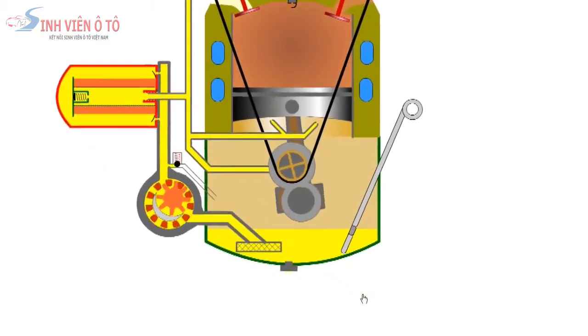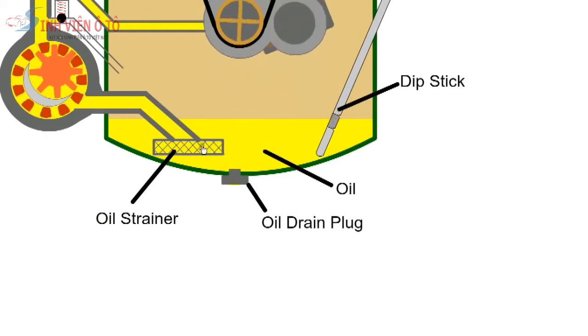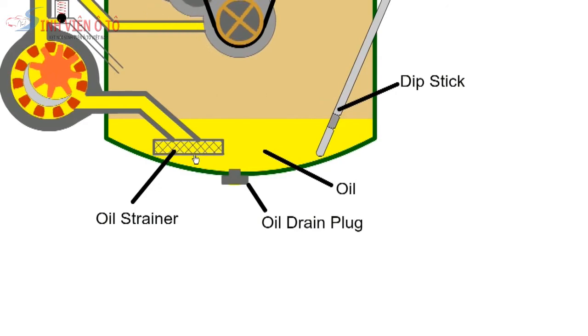The sump or oil pan provides storage of oil for the system and oil level can be checked with a dipstick. At the end of the pickup tube a wire mesh strainer protects the inlet to the pump. The oil level must be above the level of the inlet strainer but not so high that it will foul the rotating crankshaft.